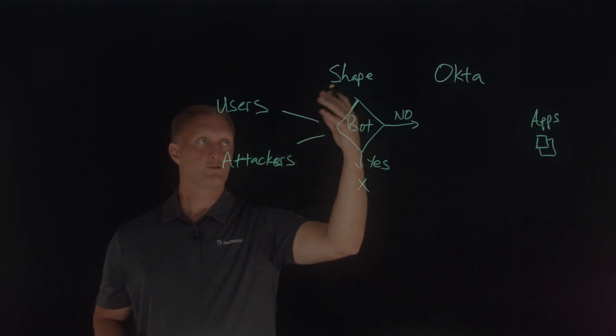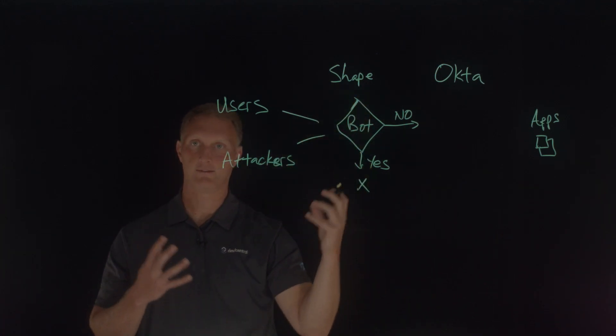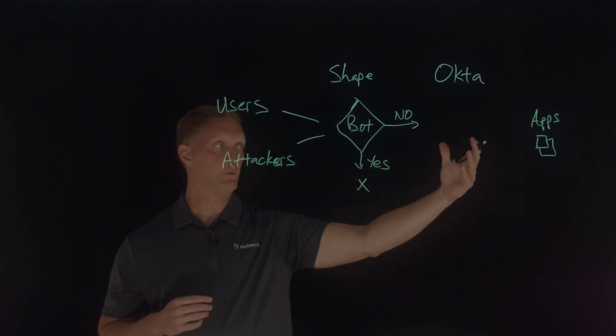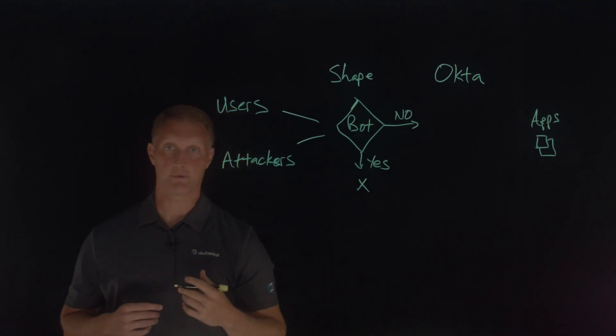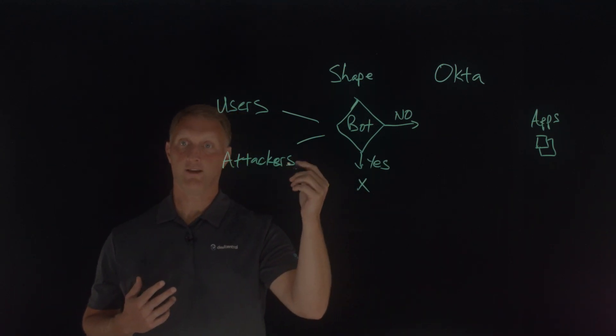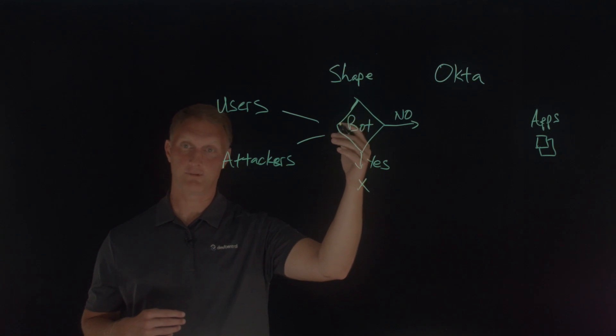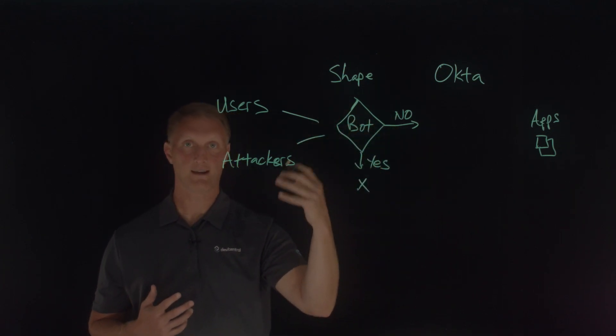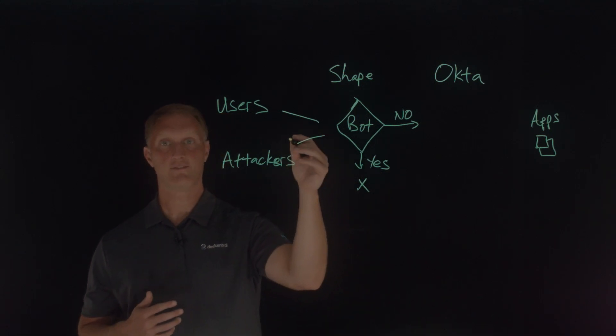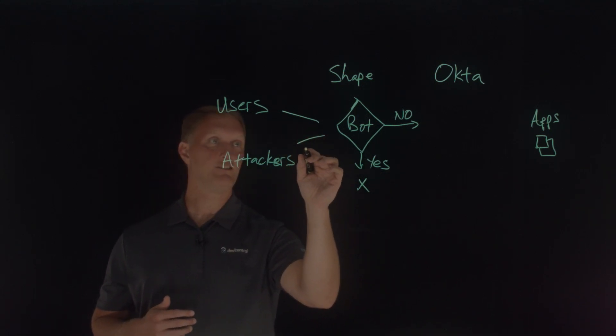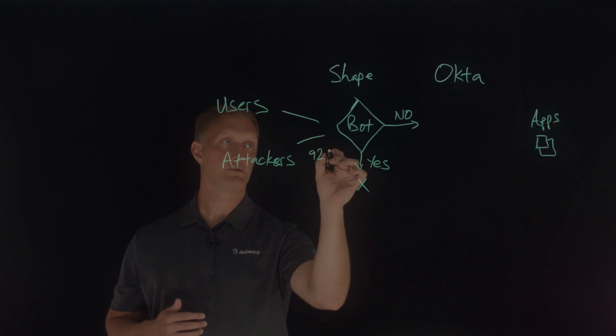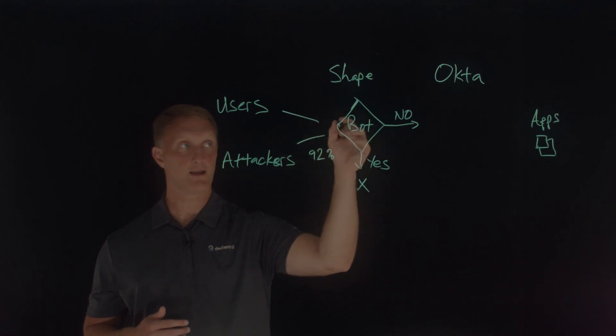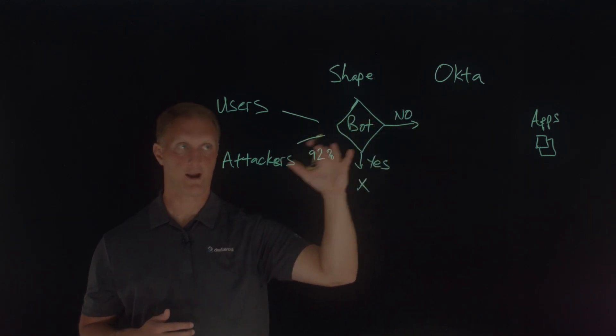I want to mention something here really quick. Over the course of time, Shape has looked at statistics on users and attackers that typically would look to access applications. And what they have found is that sign-on attempts for the CIAM type pages, these identity and access management log-on type pages, they have found that typically 92% of the traffic coming to those types of pages are automated bot attack traffic.